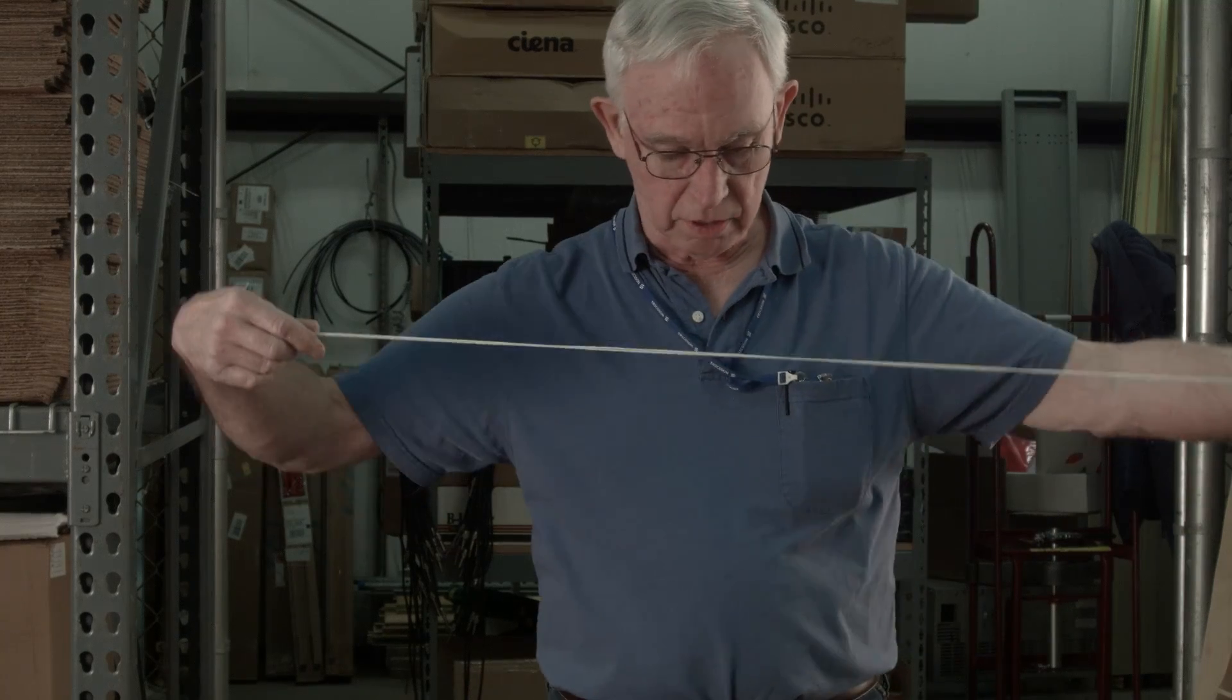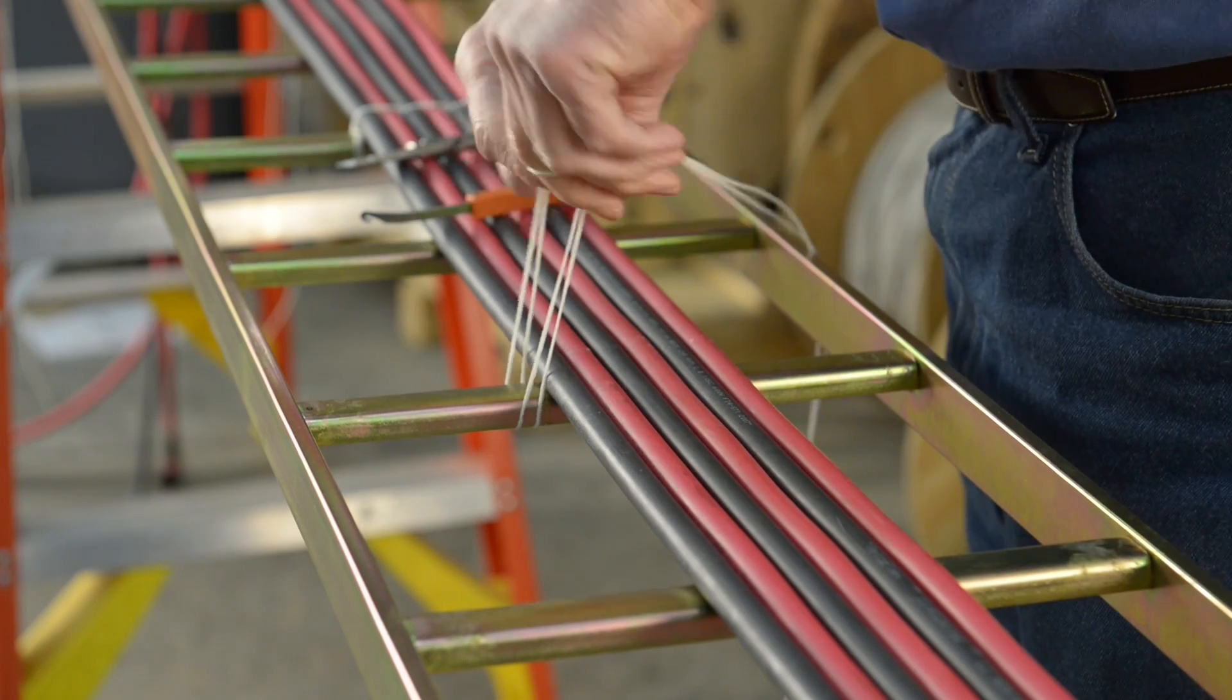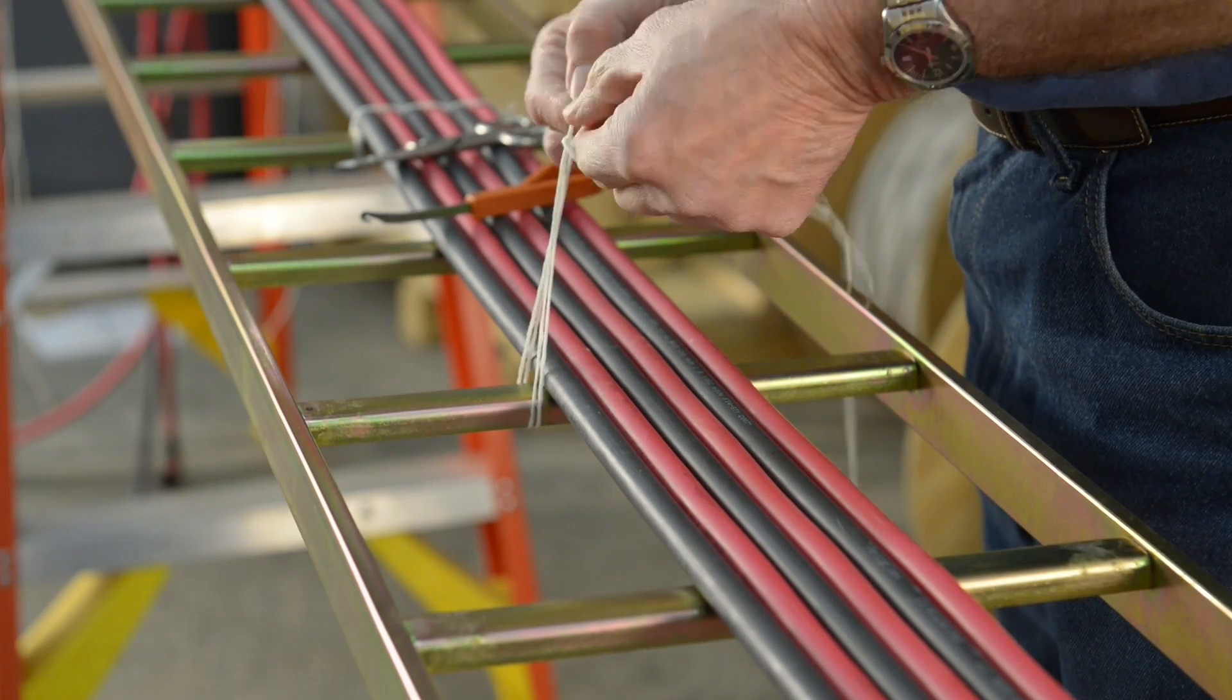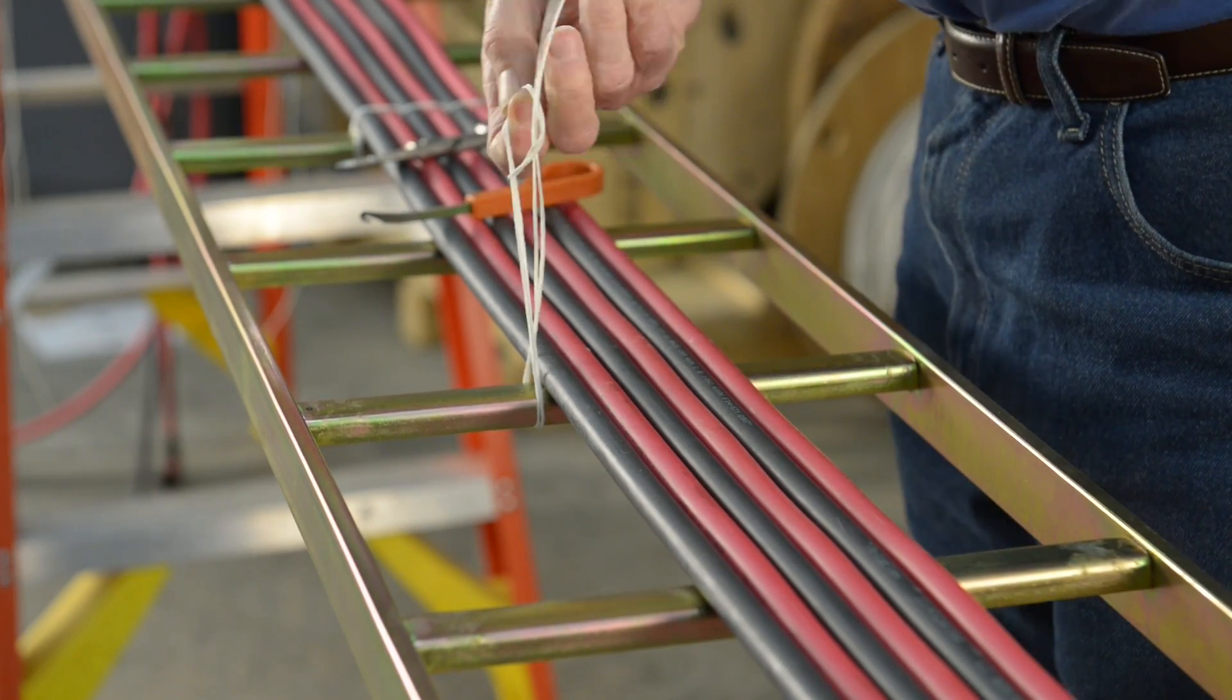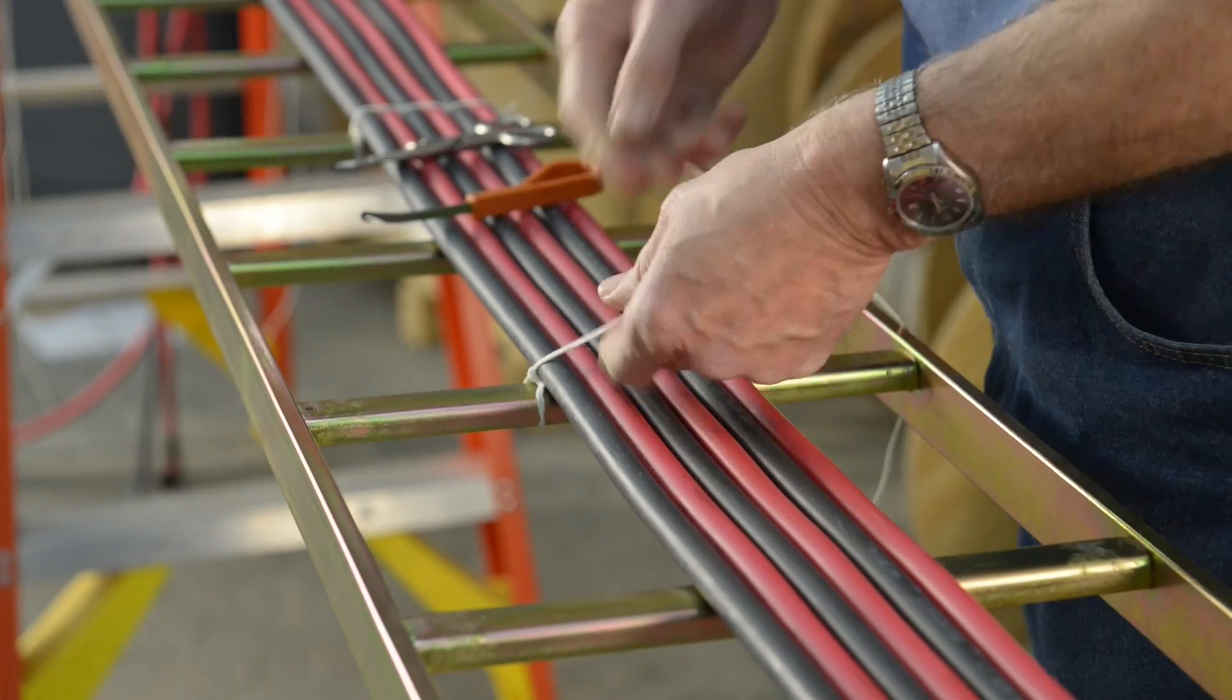Then we're going to find the center of our loop here, go around under the rung of the ladder rack, make your knot, cinch it down tight.